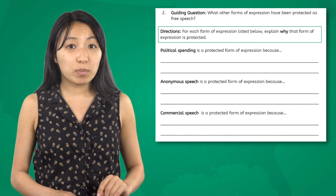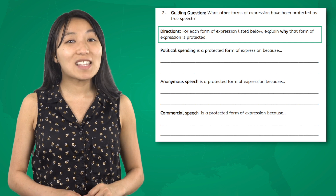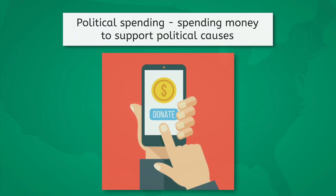Courts have recognized a variety of other forms of expression as protected under the First Amendment. Political spending, or spending money to support political causes, is protected by the First Amendment. Based on a 1976 Supreme Court ruling, the court argued that spending money is a form of political speech because it allows individuals and groups to participate in the political process and advocate for their beliefs and interests. Therefore, limiting how much people can donate to a political cause would limit their ability to express support for a candidate, political value, or political organization.